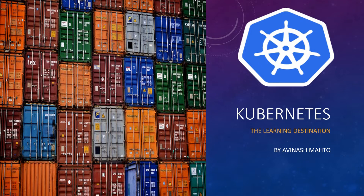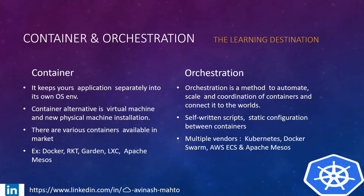In the first segment, we talk about container and orchestration. A container keeps your application separately in its own operating system environment. Through the container, your application software can be developed, shipped, and deployed. The alternative to containers is virtual machines and physical machines. There are various container vendors available in the market like Docker, RKT, Garden, LXC, Apache Mesos.